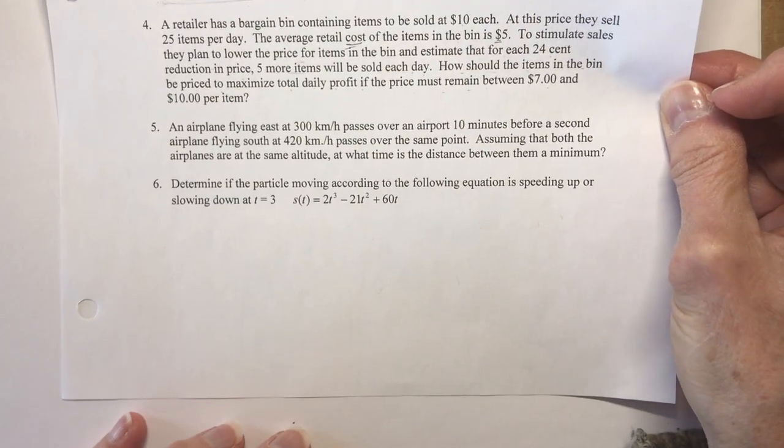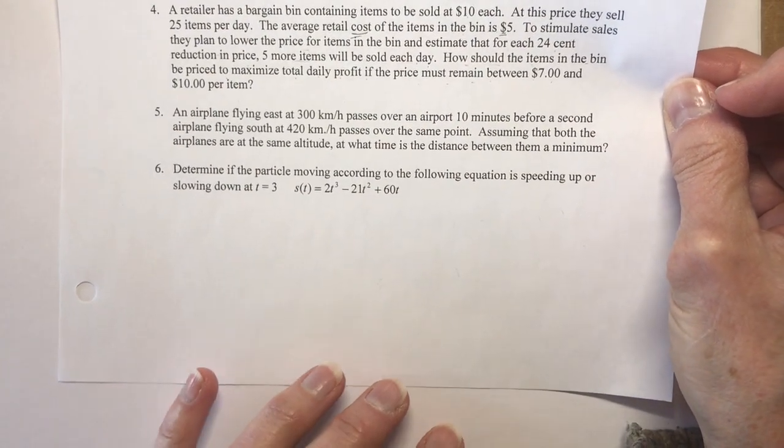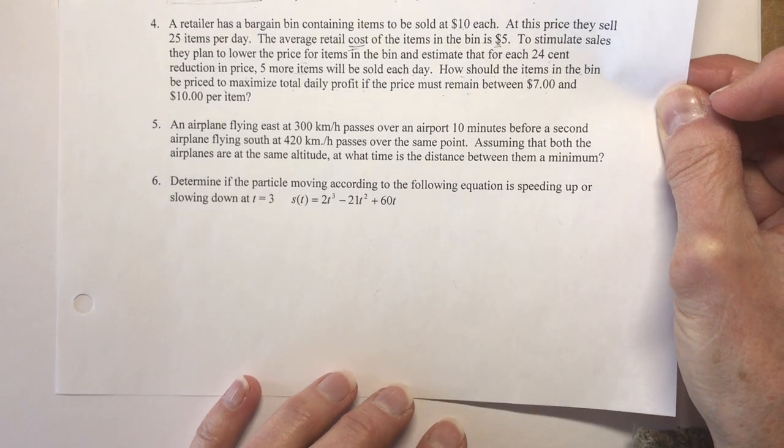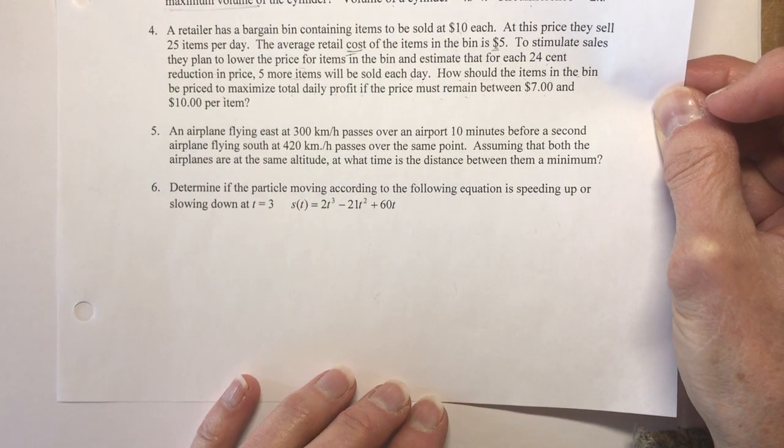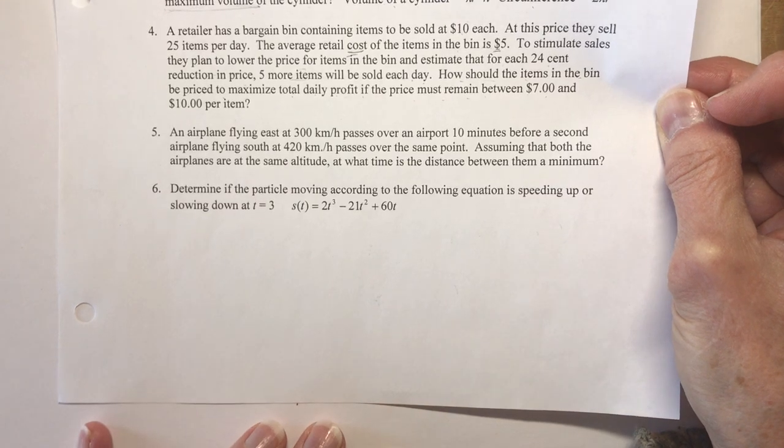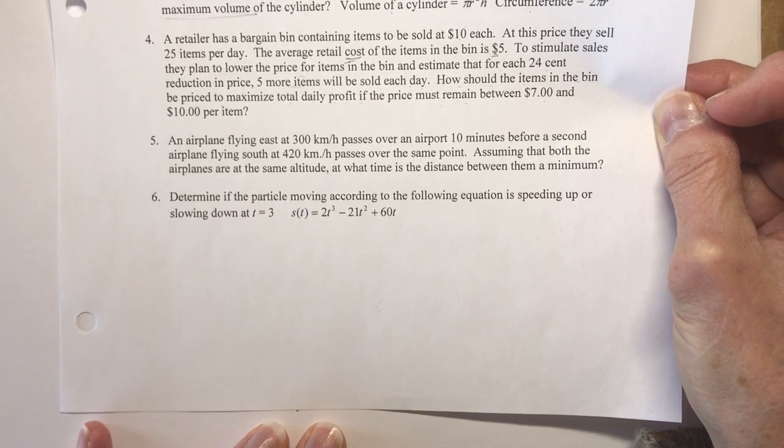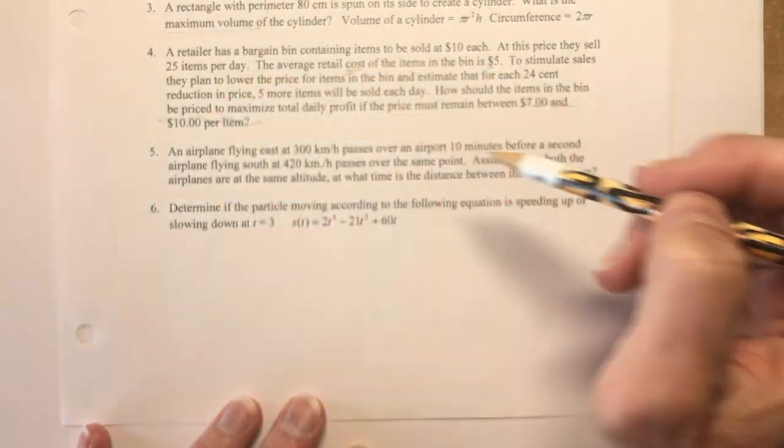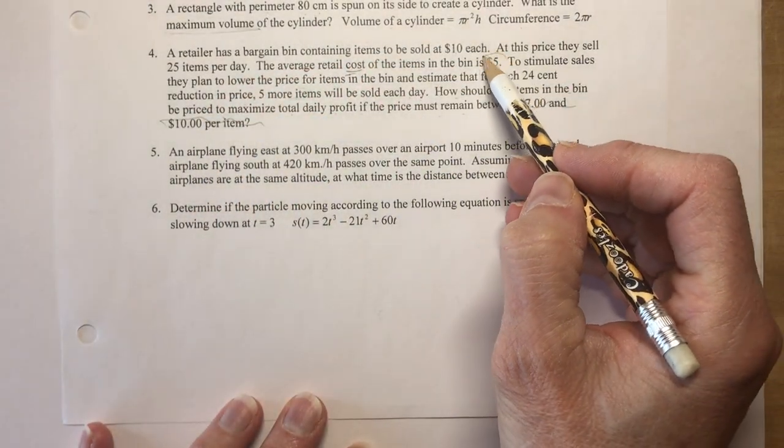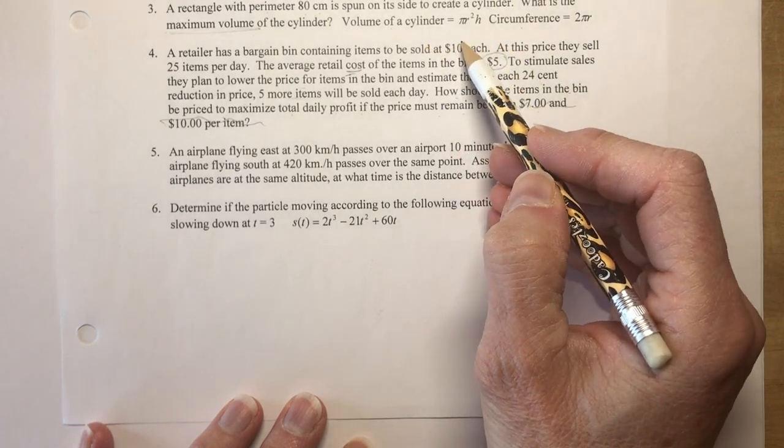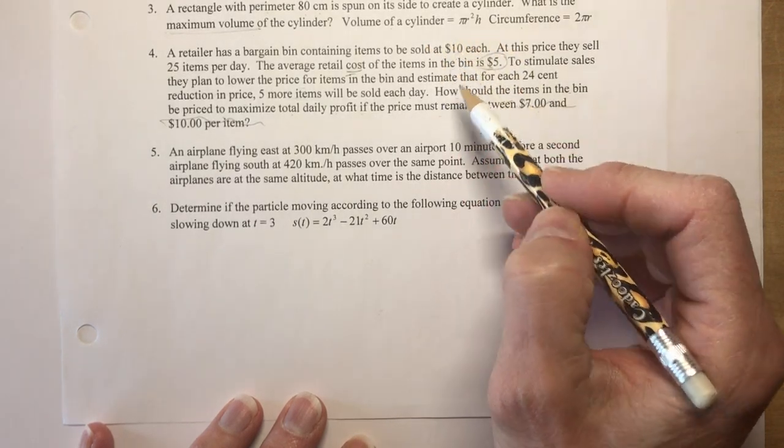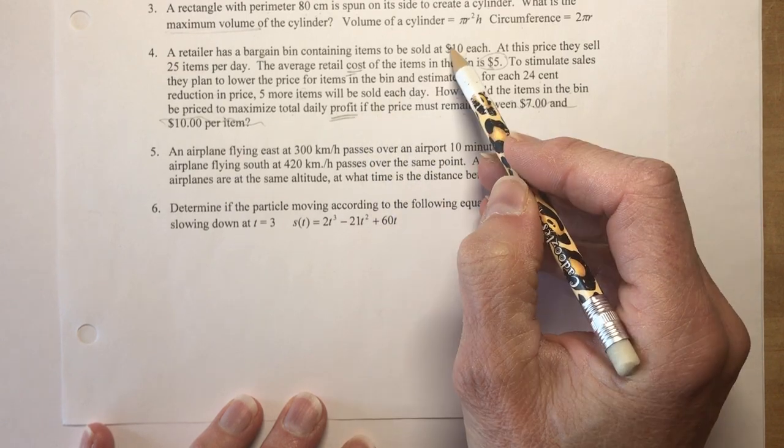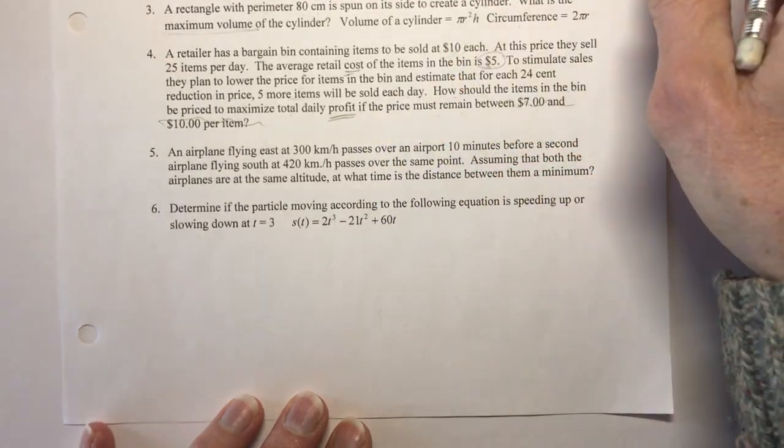Then it goes on to say if they lower the price by 24 cents, they get five more items sold each day. And how should the items be priced if they want to keep the price between seven and ten dollars per item? Okay, so this five dollars is important. The selling price is not important for a profit statement - well it is to find the profit, but it's not going to be in our equation, and I'll show you right now. We'll do this one.